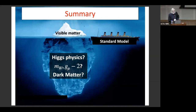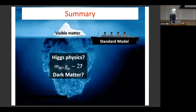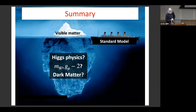That brings me to the end. Here is my image of the current status of particle physics: an iceberg with a small fraction of visible matter and a large fraction of undiscovered dark matter. We have the standard model which is doing fine, but maybe things won't be so great when it hits that iceberg. I don't know whether it's going to be sunk by Higgs physics, the W mass, g minus 2, or dark matter — but I think we can be sure the standard model will not live forever.